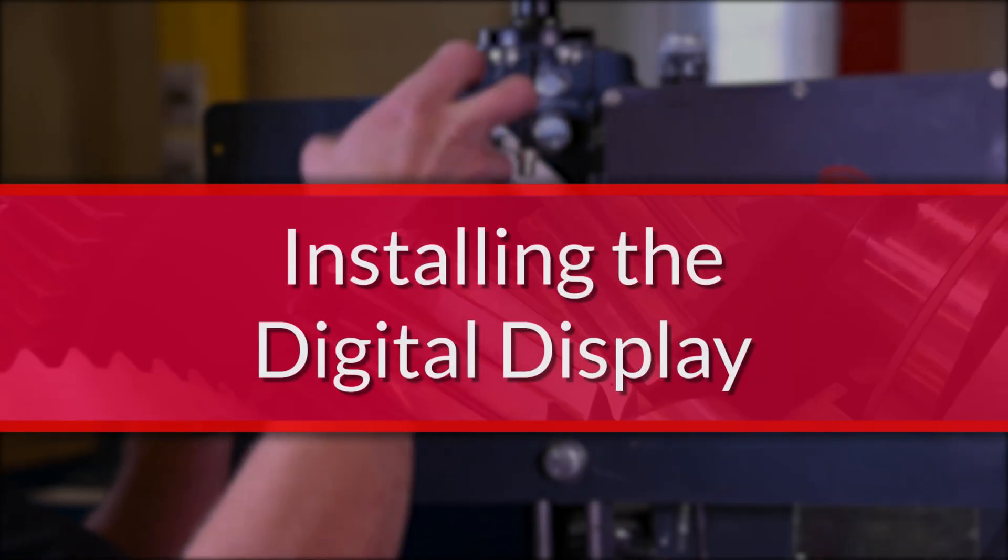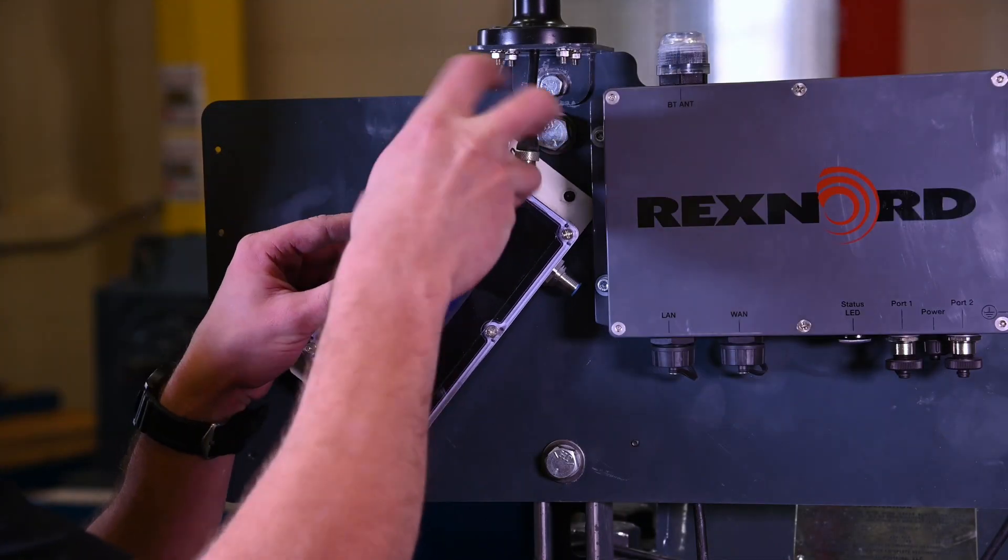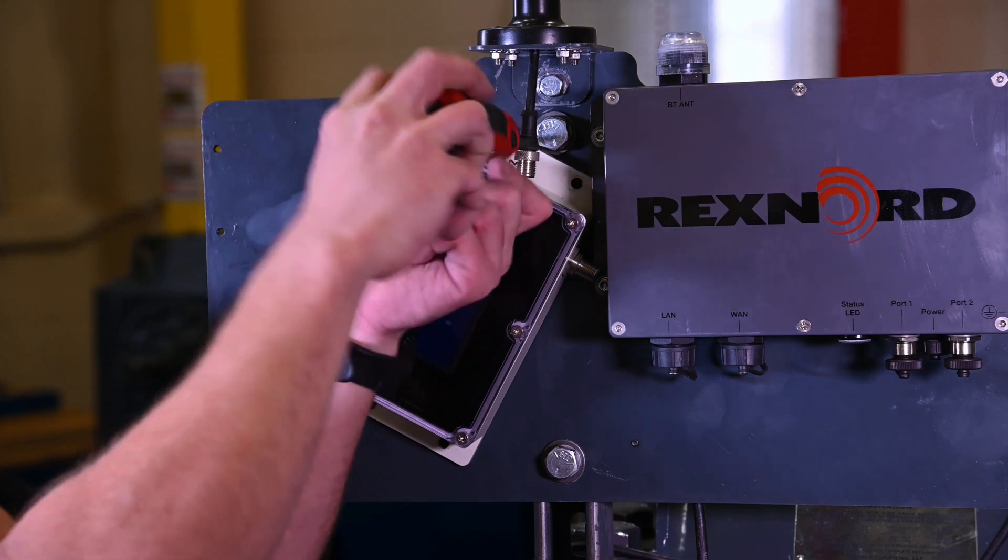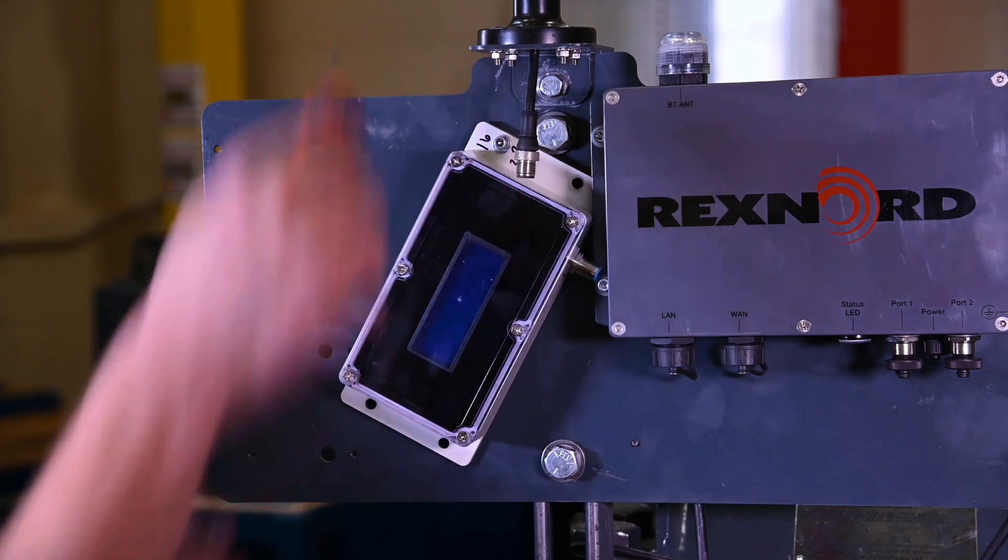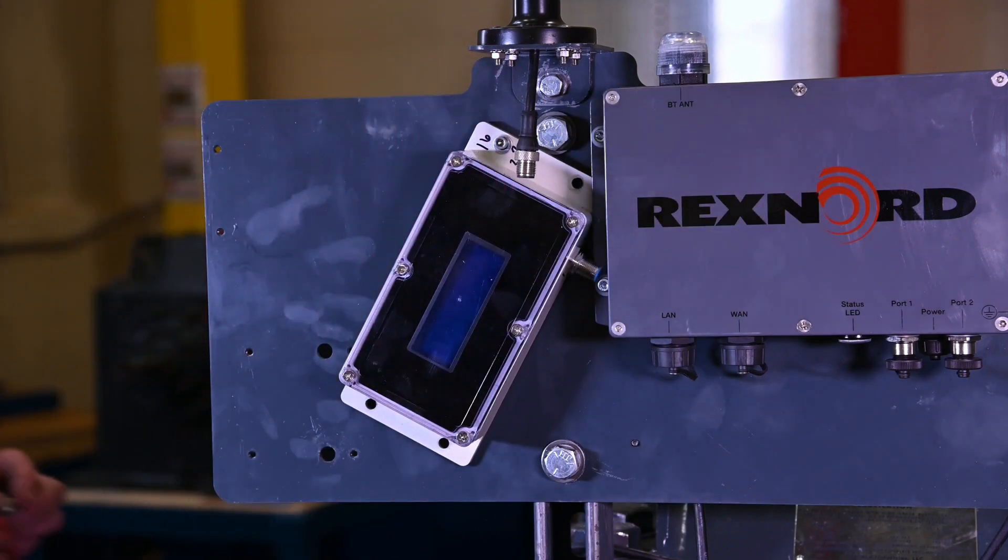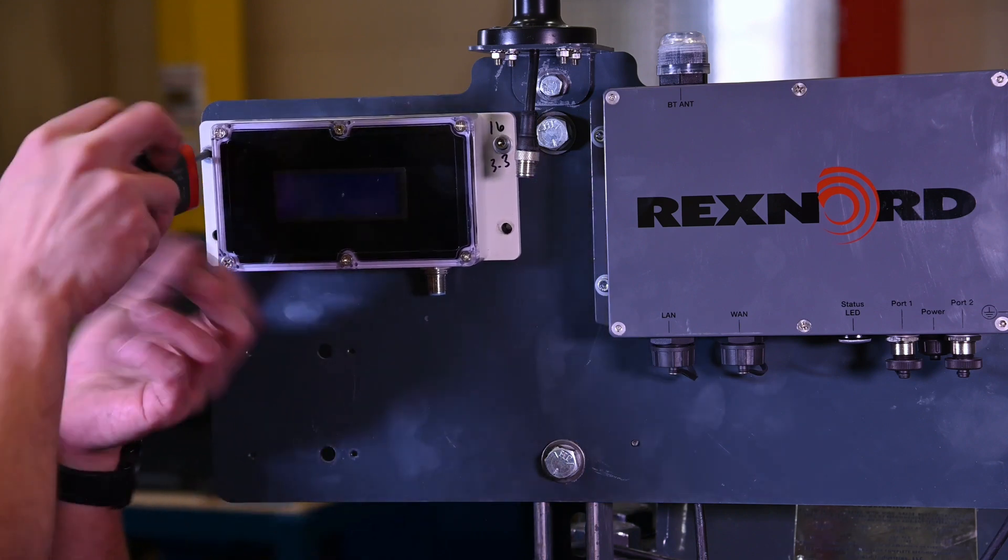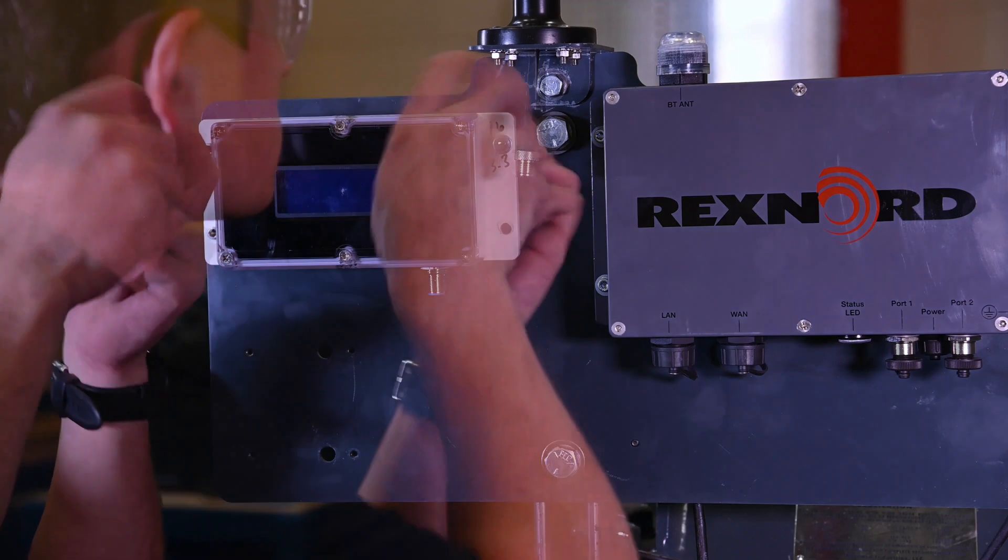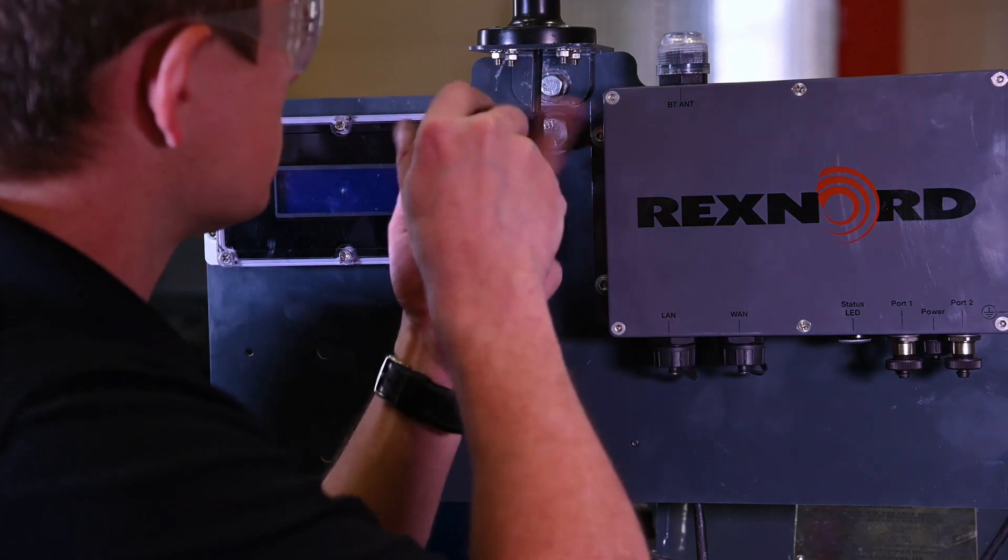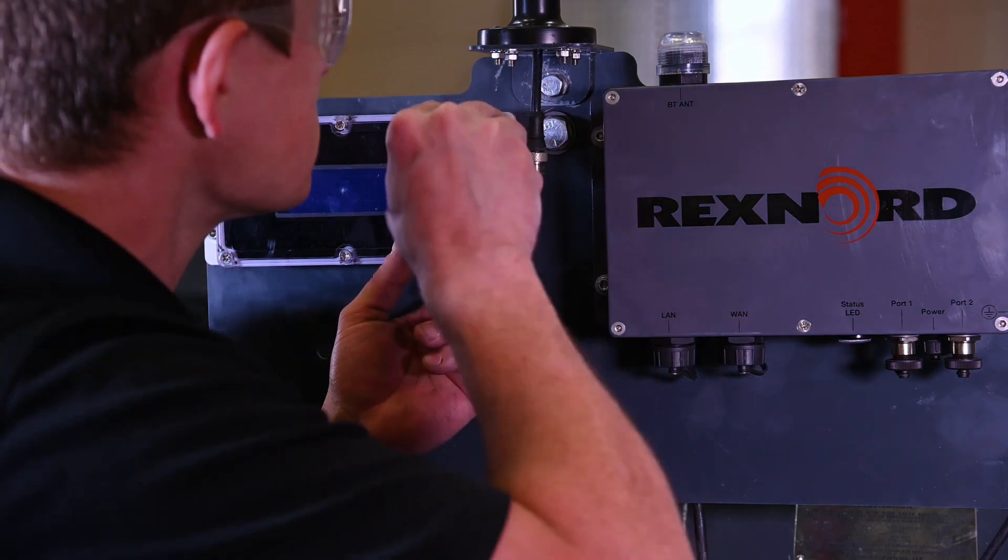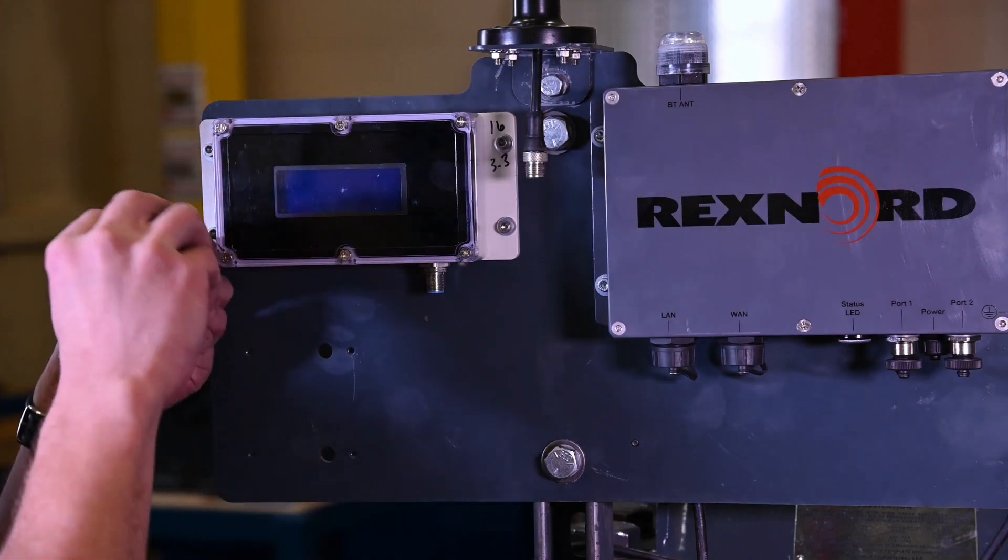The digital display is an optional add-on for the Rexnord Smart Condition Monitoring Kits and can be installed on the edge device mounting plate using the number 10 hardware to install the display to the plate. An extra Y cable is included with the display kit to connect the display to the edge device.